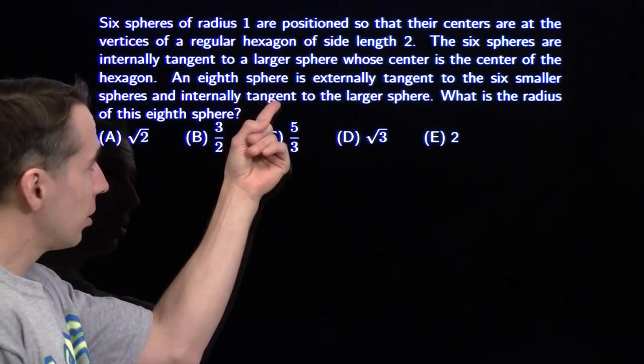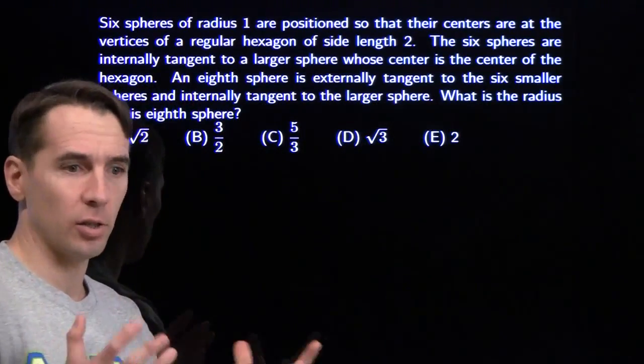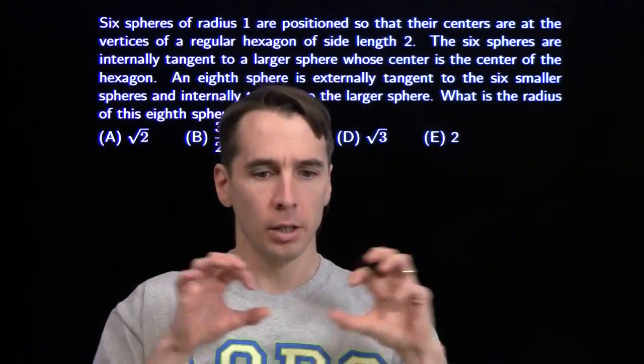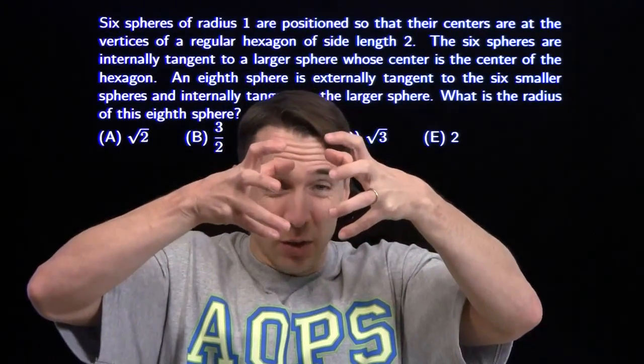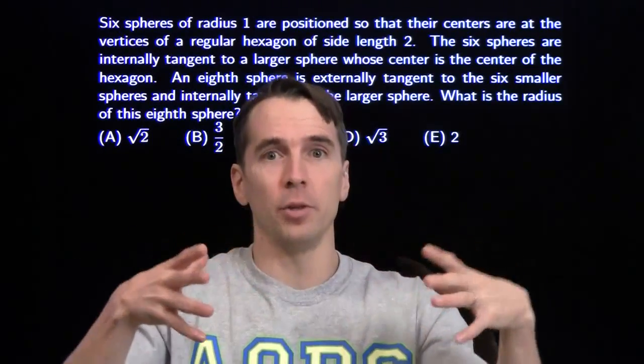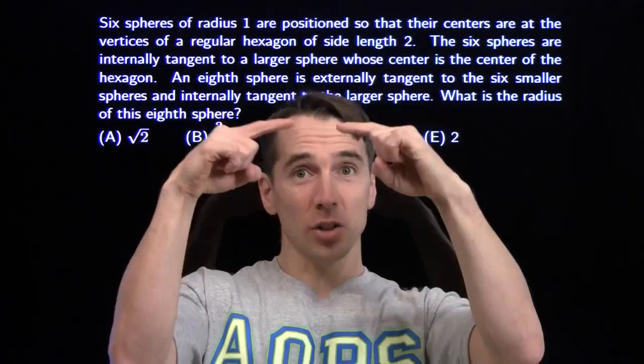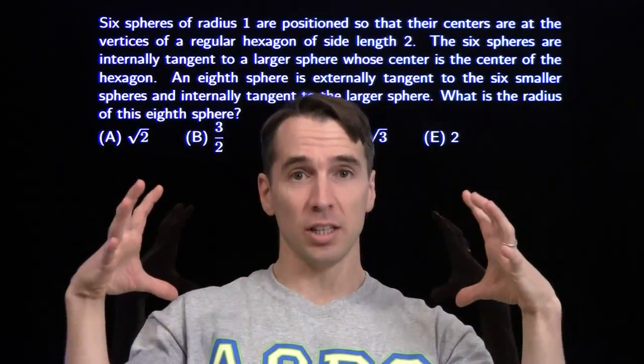And then we bring out an eighth sphere that's externally tangent to the six little ones. So we've got our six little ones down here around the hexagon, and we're going to take this new sphere and just set it right on top of those six. And it's going to touch, right at the top of it, it's going to touch this larger sphere.